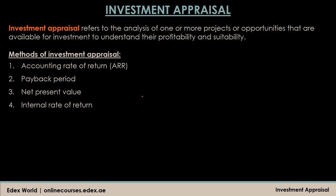The methods we have in the syllabus are: the accounting rate of return, the payback period, the net present value method, and the internal rate of return method. Results from these methods may differ — for example, the accounting rate of return method may indicate project A is better, while the net present value method may indicate project B is better. We will also look at advantages and disadvantages of these methods briefly.